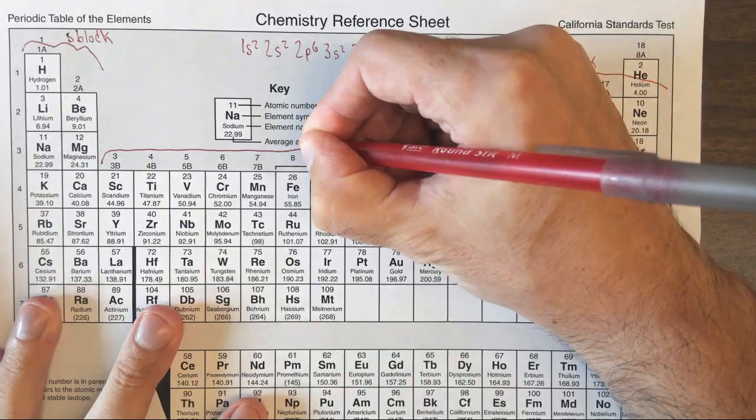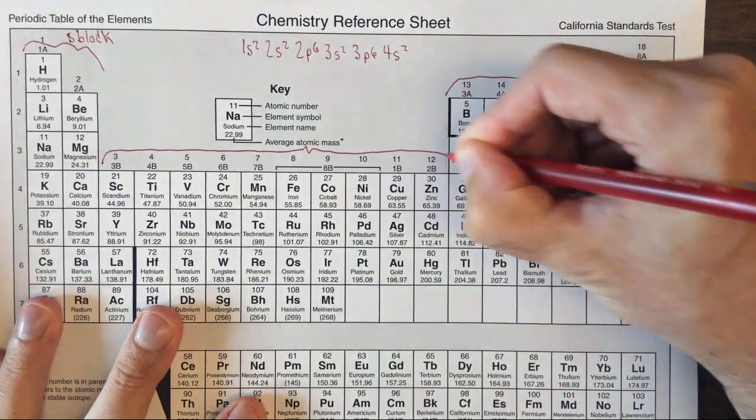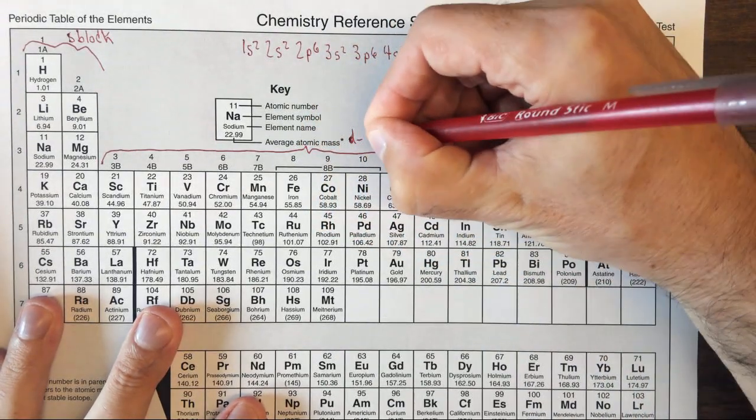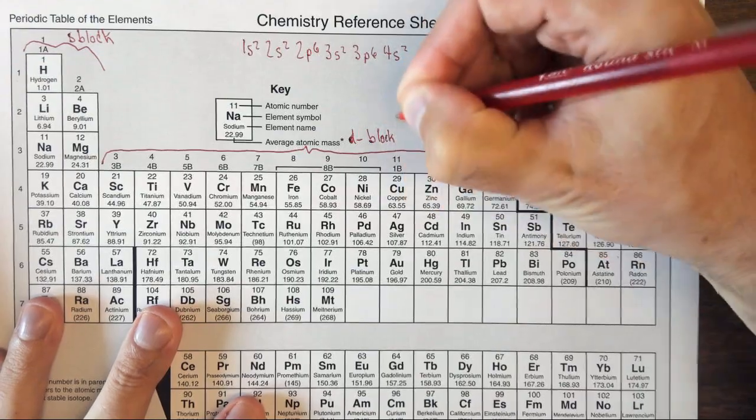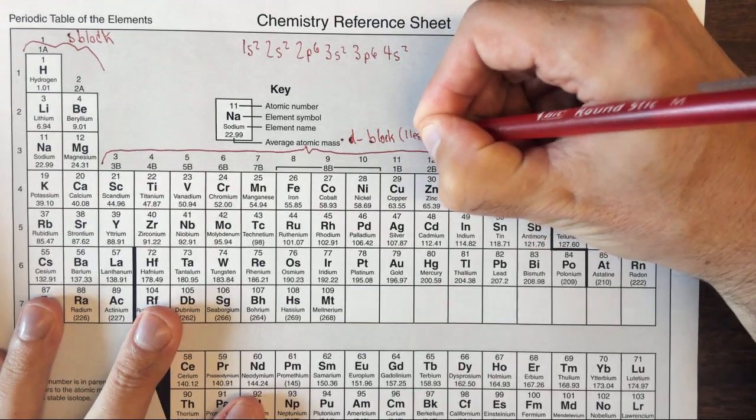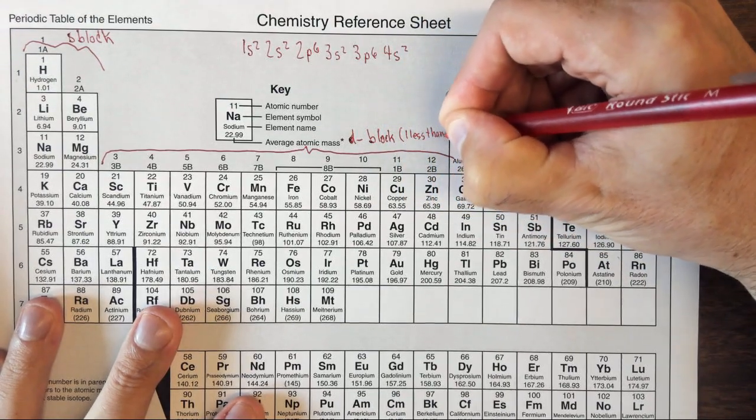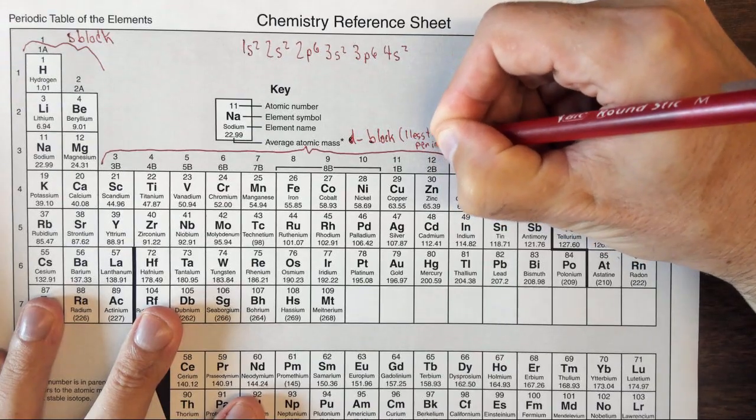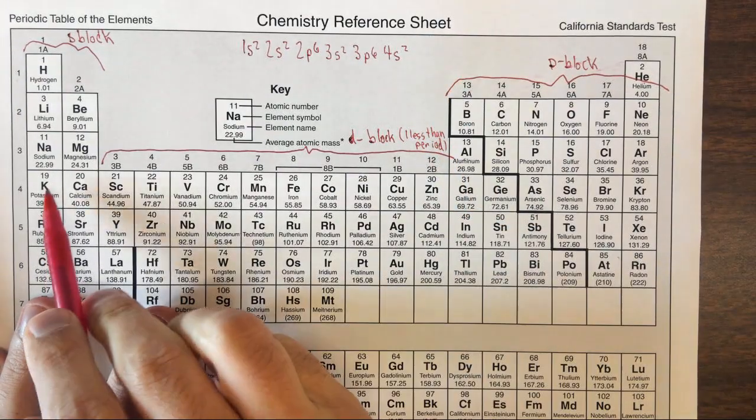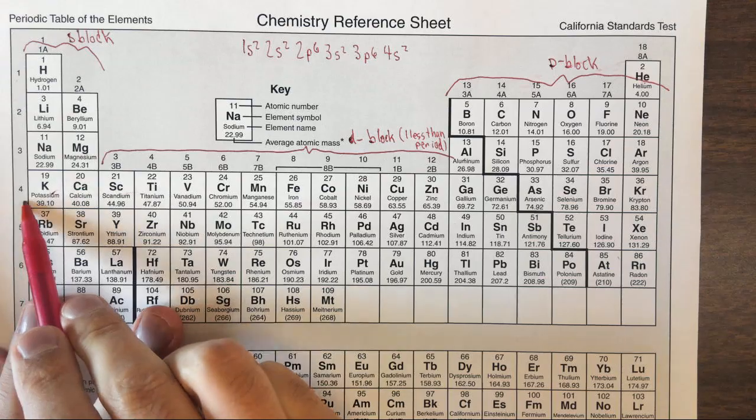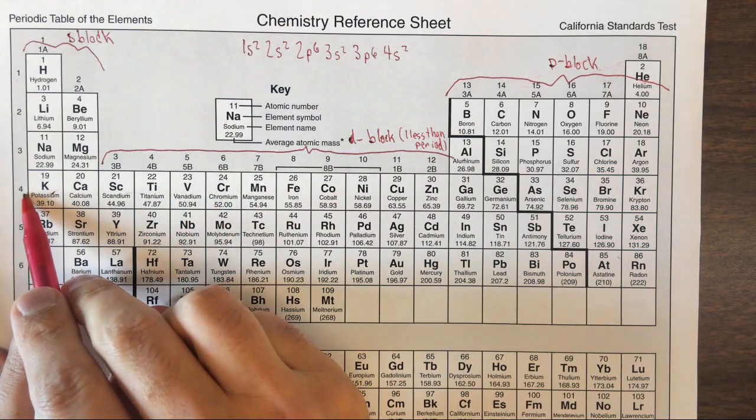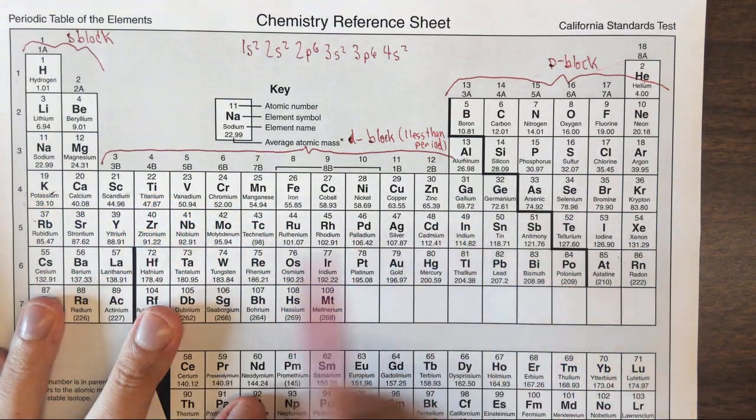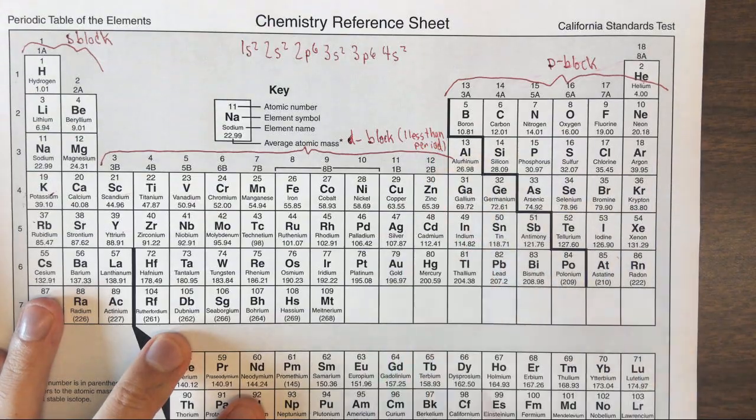These ones in the middle, although they won't come up in this question, are important. These are the d-block. And this is 1 less than the period. So these are not the 4d, these are the 3d, 4d, 5d. They're 1 less than the period.